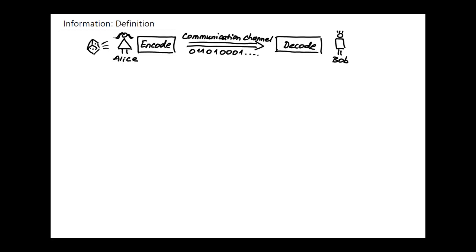First, I'd like to introduce the concept of information, or a mathematical, quantitative measure for information. The starting point is a simple setup for communication between two parties, the two famous personalities that appear over and over again: Alice and Bob, and they communicate with each other.